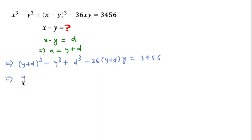After expanding we can write y³ plus d³ plus 3y²d plus 3yd² minus y³ plus d³ minus 36y² minus 36yd equal to 3456.